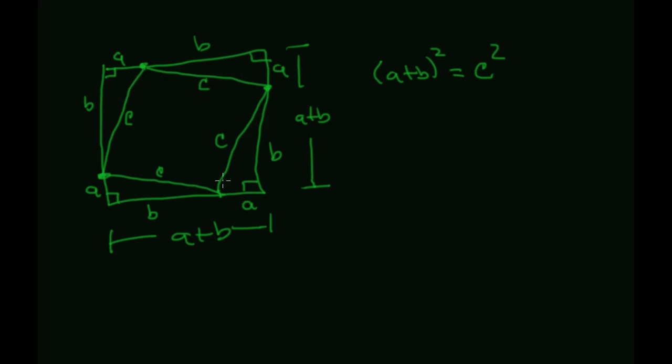plus the area of each of these triangles. Well, there's four of those, right? So it's going to be four times, and the area of a triangle is one-half. It's base, so we can make either A or B the base. So let's make the base A times its height B.